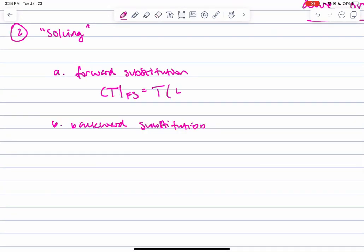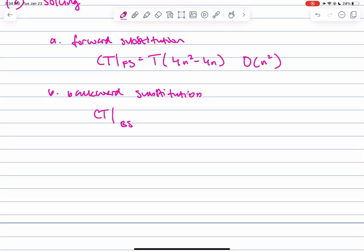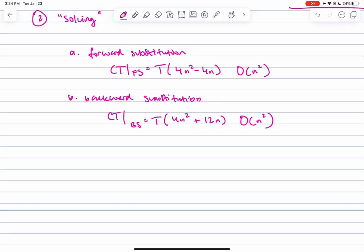For the solving phase, the forward substitution part is this which has a big O of n², and the back substitution part has this which is also big O of n².